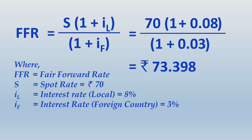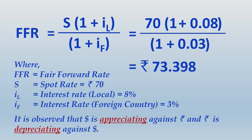From this we can conclude — which is the answer for the second part of the question — that the dollar is appreciating against the rupee and the rupee is depreciating against the dollar. Now it is time for us to find the premium and discount rates.